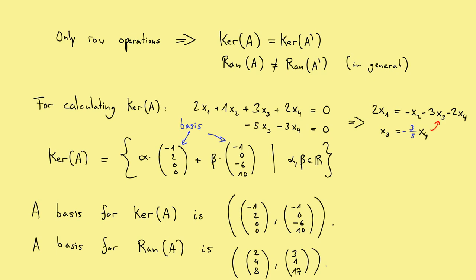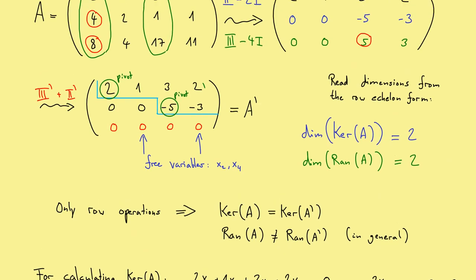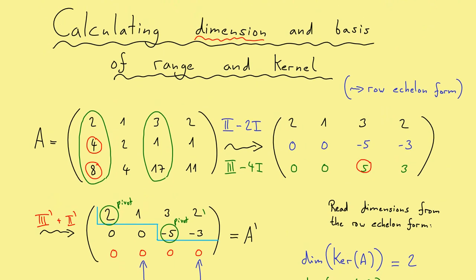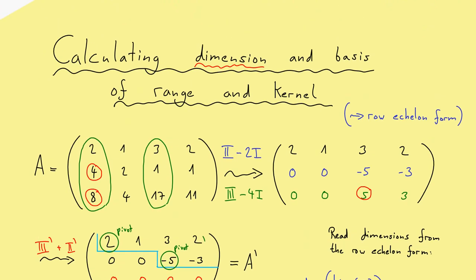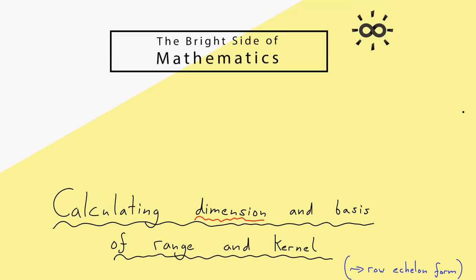And there we have it — we have calculated a basis for the kernel and a basis for the range of our given matrix A. As a quick recap: we knew from the beginning we had to calculate both the range and the kernel. For the kernel we need the row echelon form, and the idea was not to use a second calculation for the range, but to simply use the row echelon form to extract all the information for the range as well. We saw that row operations may change the range, but we get out the dimension and the linearly independent columns. I really hope that helped you a little bit — see you next time.